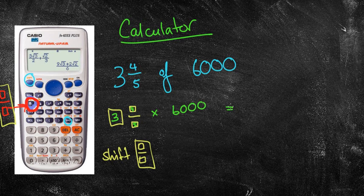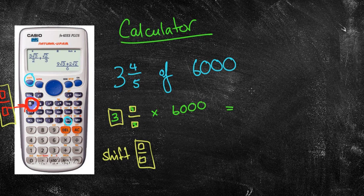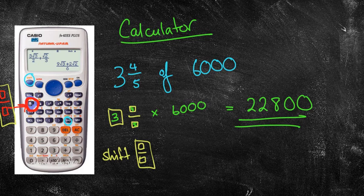So if you look at your fraction button, above it in yellow you'll actually see this box which is your mixed numeral box. So if you press shift and then your fraction button, it will put that button there. You can type in 3, 4 fifths, of means times, and 6000, and then depending on how you would like your answer to be written, if you want it as an improper fraction you can just leave it as is. If you want it as a mixed numeral, you can press shift SD. But in this case, the answer comes up to be 22,800. So there's no need to put it into fraction key.